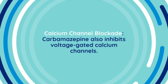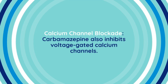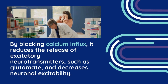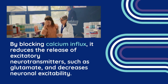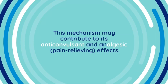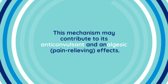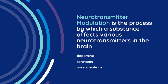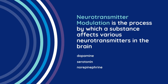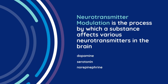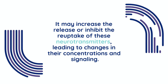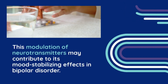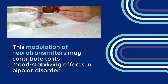Calcium channel blockade: carbamazepine also inhibits voltage-gated calcium channels. By blocking calcium influx, it reduces the release of excitatory neurotransmitters such as glutamate and decreases neuronal excitability. This mechanism may contribute to its anticonvulsant and analgesic pain-relieving effects. Neurotransmitter modulation: carbamazepine affects various neurotransmitters in the brain, including dopamine, serotonin, and norepinephrine. It may increase the release or inhibit the reuptake of these neurotransmitters, leading to changes in their concentrations and signaling, which may contribute to its mood-stabilizing effects in bipolar disorder.